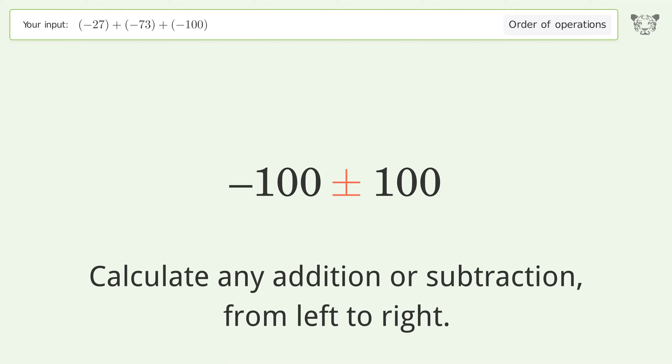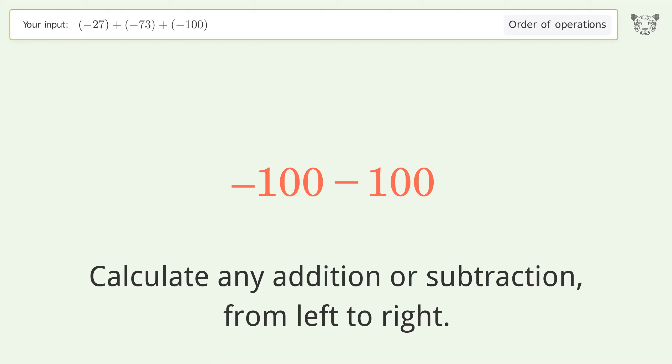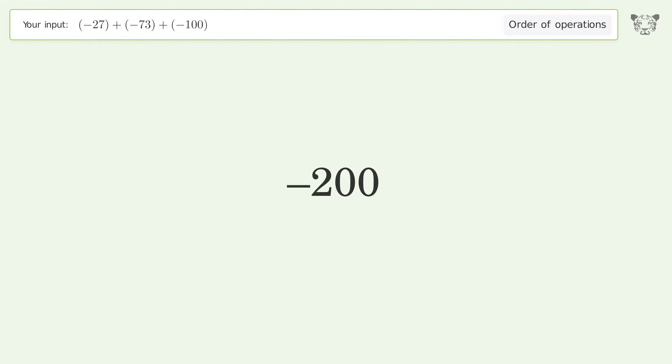Minus plus minus: negative 100 plus negative 100 equals negative 200. And so the final result is negative 200.